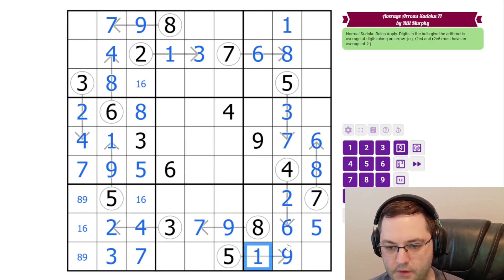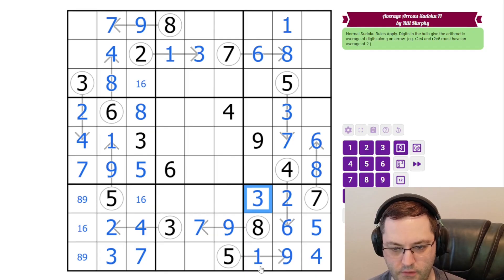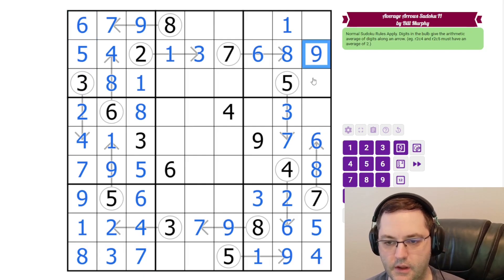One and nine in the column, that's going to force a one on the five. Three, four here is resolved. The nine resolves eight, nine. The six resolves one, six, and one up here, five and six. This is nine.